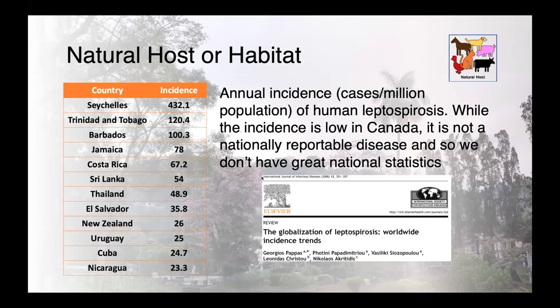Leptospira is not a nationally reportable disease in Canada, so we don't have great statistics on exactly how common it is. We know it's relatively uncommon here compared to other parts of the world. The countries with the highest incidence tend to be tropical regions — the Seychelles in the Western Indian Ocean, the Caribbean, and South and Southeast Asian countries — and we would expect a similar trend in animals as well.